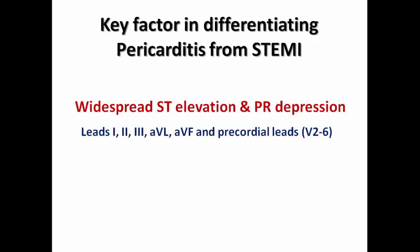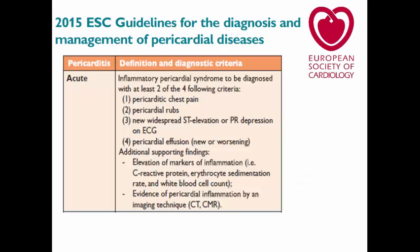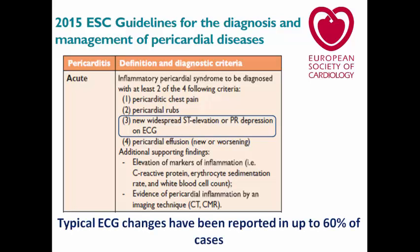The key factors in differentiating pericarditis from STEMI include widespread ST elevation and PR depression involving leads 1, 2, 3, AVL, maybe AVF, and precordial leads usually V2 to V6, plus ST depression and PR elevation in AVR and sometimes V1. According to the ESC 2015 guidelines on pericardial disease, new widespread ST elevation or PR depression on ECG is one of the four criteria needed — with two criteria required — to diagnose pericarditis.